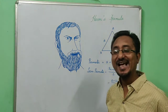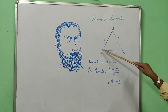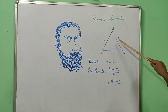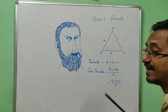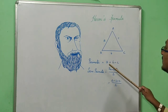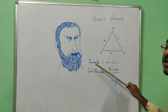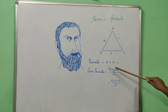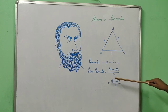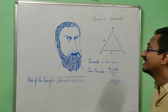For Heron's formula we should know the concept of perimeter and semi-perimeter. I have taken triangle ABC with sides AB = a, BC = b, and AC = c. The perimeter is the sum of all sides, so perimeter equals a plus b plus c. Semi-perimeter means half of the perimeter, so semi-perimeter S equals (a + b + c) / 2.